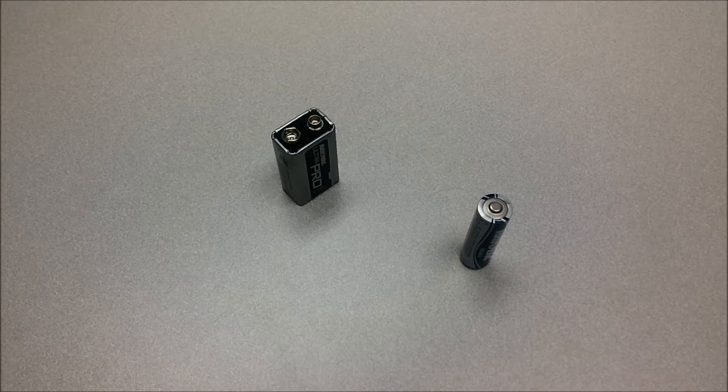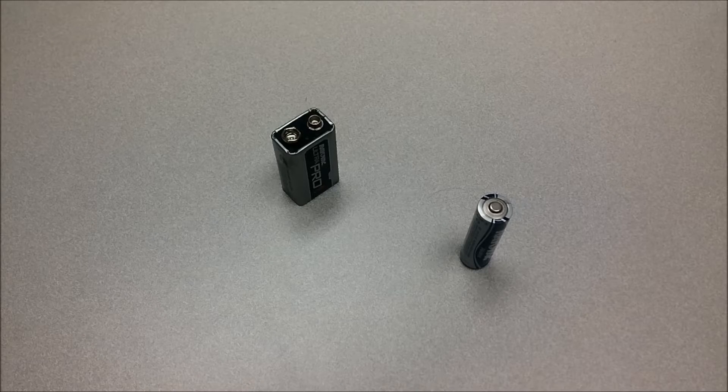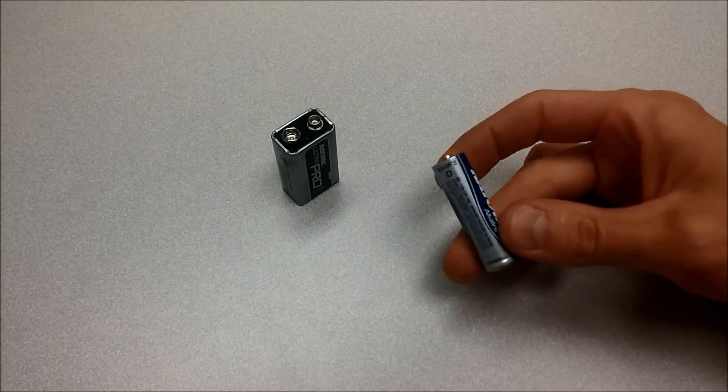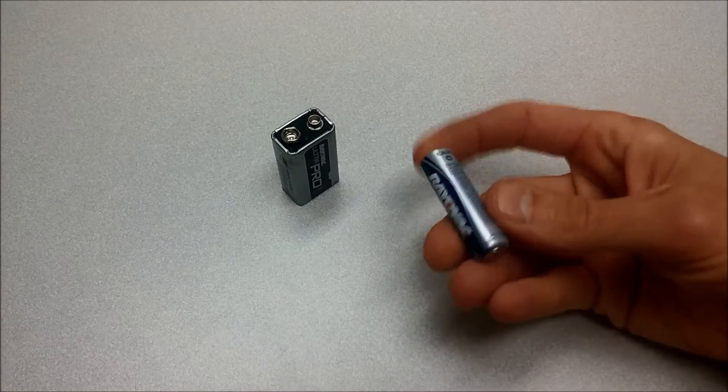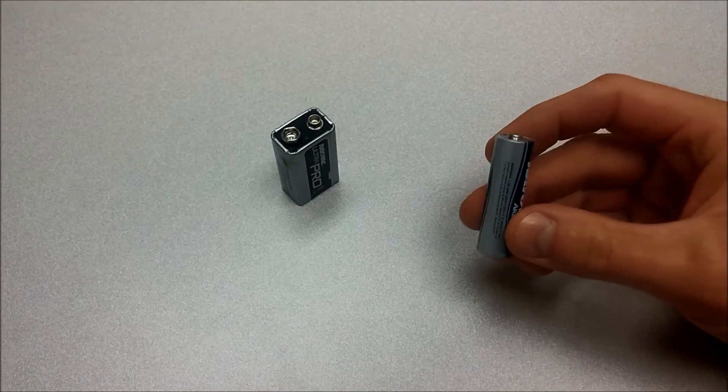First, we use the term battery to sometimes describe a single cell or multiple cells. In this AA battery right here, we're all familiar with AA or AAA batteries that look like this. This is one single battery cell.